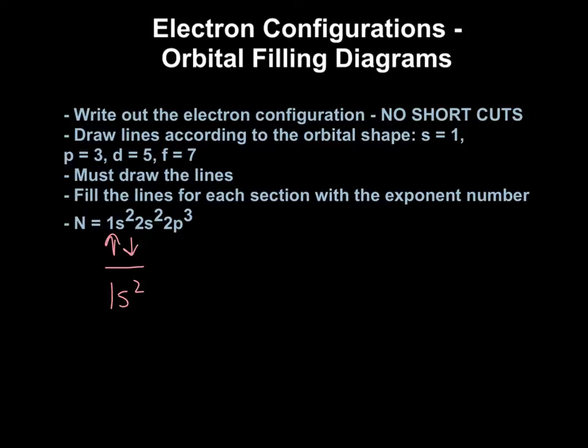Next, I move on to my next part of my electron configuration, which is 2s2. Again, we see here, I have an S orbital. So I'm going to draw one line again. So I write out my electron configuration, 2s2, and I draw my one line. And now my exponent here tells me I have two electrons. So now I need to draw two arrows again, also one up and one down, showing me that the electrons are spinning in opposite directions.